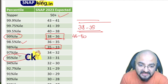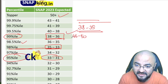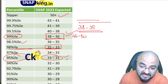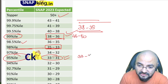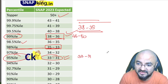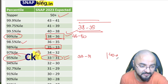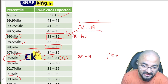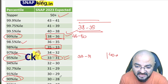The next target is 95 percentile — this will get you into SIBM, SMHRD, SIOM, and SIBM Bangalore. The target score will be around 31 to 33 marks, and the attempt needs to be around 40 plus again, depending on accuracy. This year, the SNAP paper is very much based on accuracy.